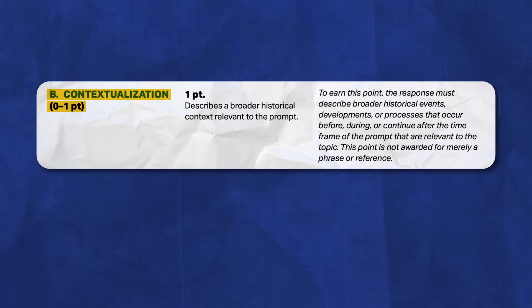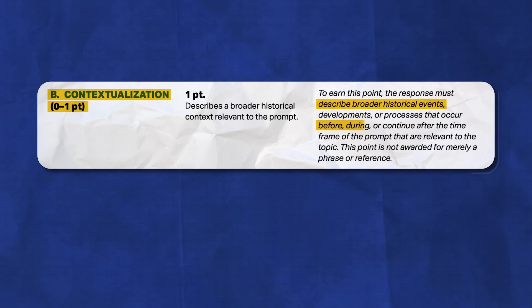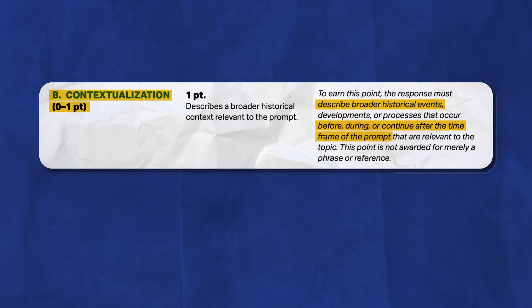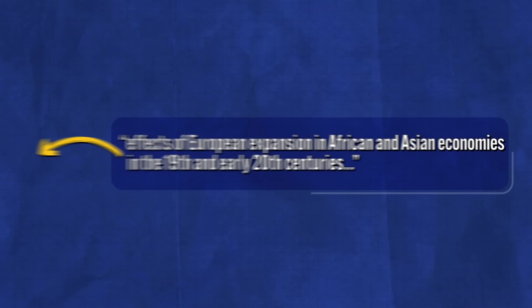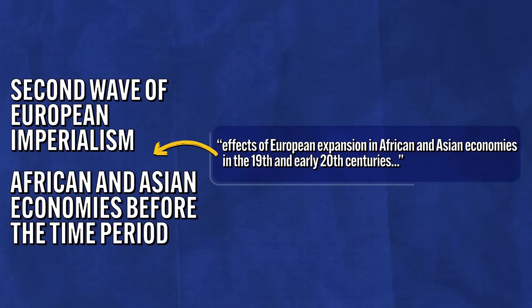The second point is for contextualization, and you can earn up to one point here. Contextualization situates your argument in the larger historical context. The rubric says you can explain historical context before, during, or after the time period of your prompt, but the most intuitive way is by explaining relevant events that occurred before your given time period. Your contextualization should be about two to four content-rich sentences describing historical events related to your prompt — it needs to be related and relevant. For example, if your thesis is about European expansion's effects on African and Asian economies in the 19th and 20th centuries, your contextualization needs to go backwards and explain how we got there.